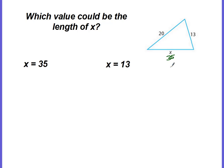If we made this side length 35, and we added 20 plus 13, that's 33. And 33 is not greater than 35. So 35 does not work. So let's try 13. 20 plus 13 is 33, which is greater than 13. So that works.